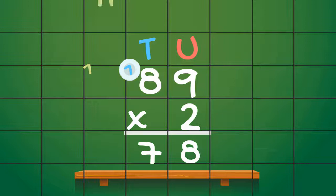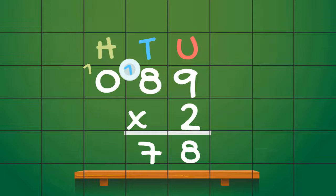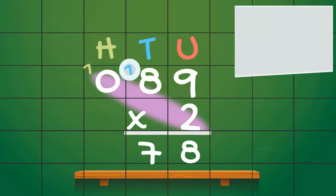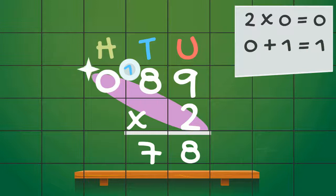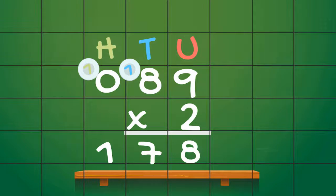Now, as you can see, there is nothing in the hundreds column, so there are 0. 2 multiplied by 0 is 0, and when we add the 1 that we carried, we get 0 plus 1 is equal to 1. So we write that 1 in the hundreds column, like this. And that's all there is to it.